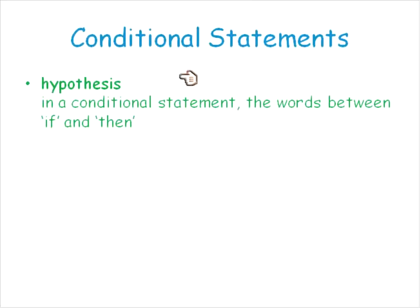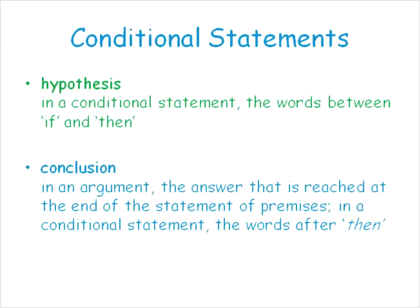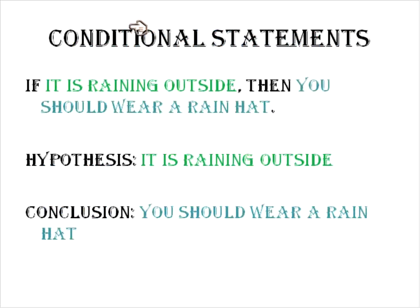So let's look at the different parts again. The hypothesis in a conditional statement is the words between 'if' and 'then.' The conclusion are the words after 'then.' In an argument, a conclusion is the answer that is reached, but in a conditional statement, it's the words after 'then.' For example: if it is raining outside, then you should wear a rain hat. The hypothesis — 'it is raining outside' — and the conclusion — 'you should wear a rain hat.'